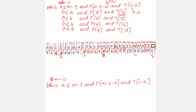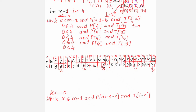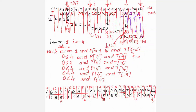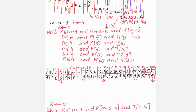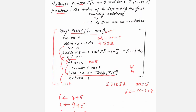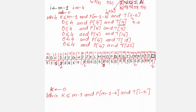Now i equals 22. We enter the inner while loop with k equal to 0. Is 0 less than or equal to 4? Yes. We check p[4] against t[22-0] = t[22]. t[22] is 'a' and p[4] is 'a' — they match! Since there is a match, we increment k by 1, so k becomes 1.